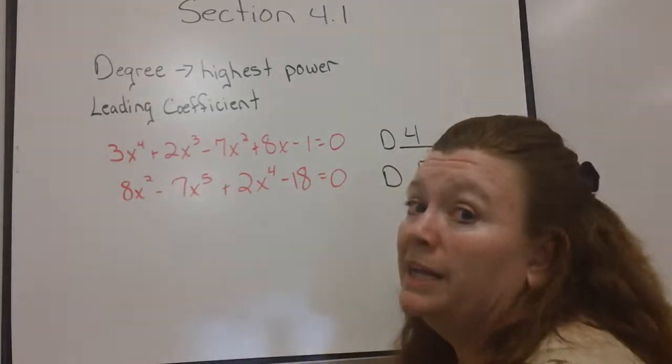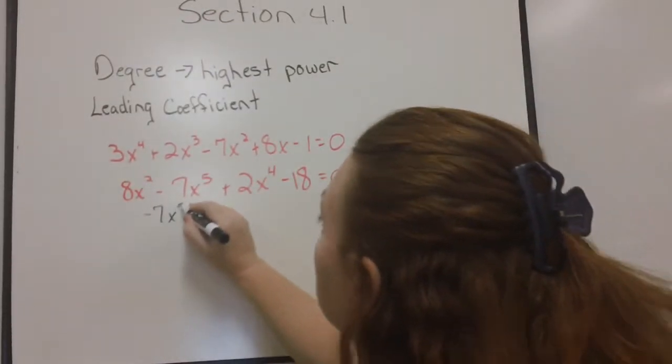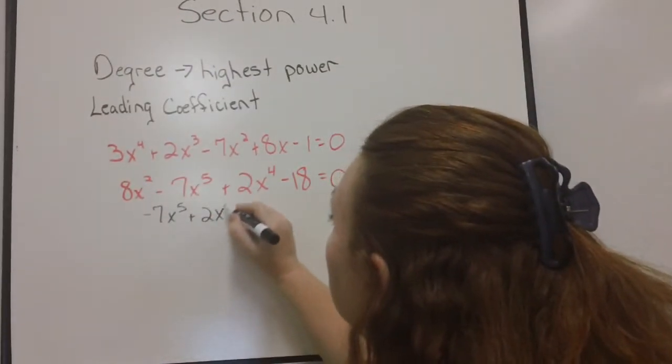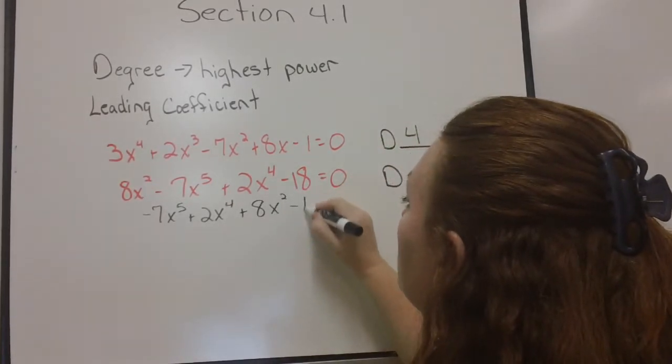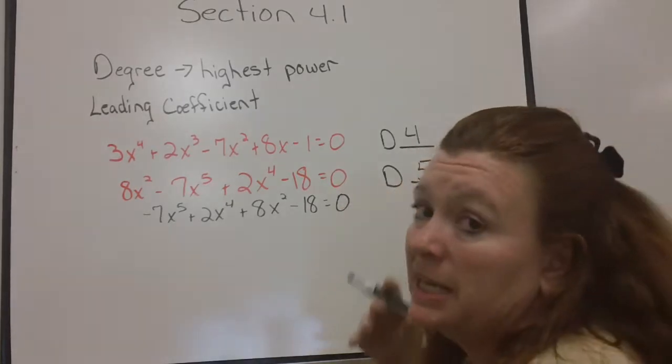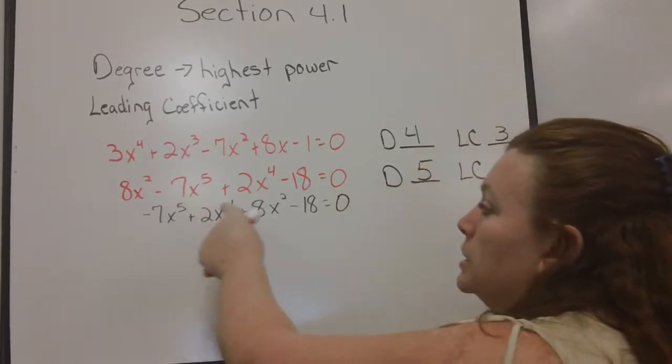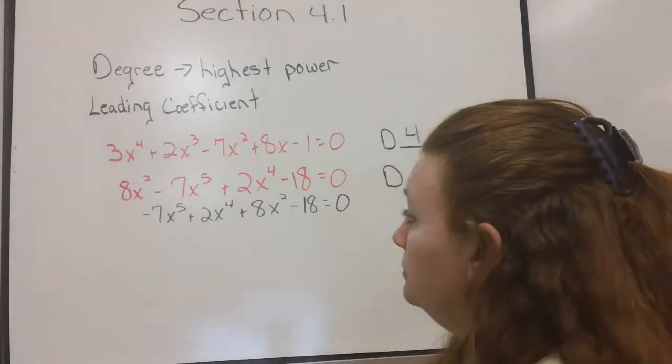If I were to rewrite it in the proper order, it would have looked like this. Because you have to remember, when you write a polynomial, you write it in what we call descending powers. And you start with the highest and you work your way down. So, don't forget the sign comes with it.